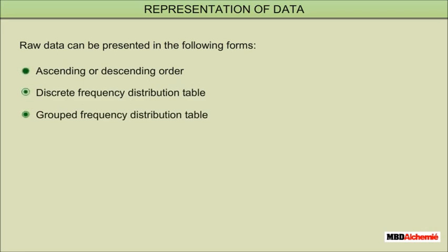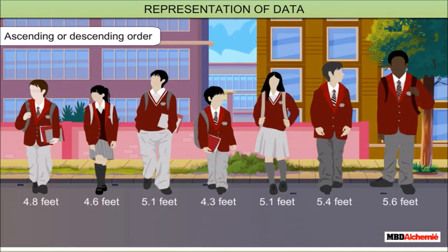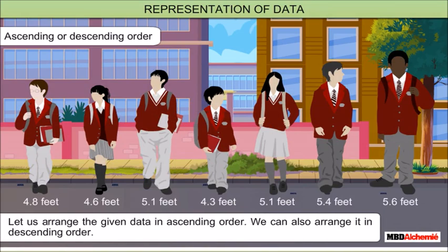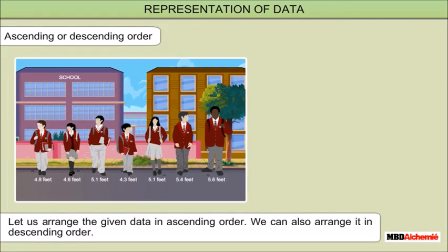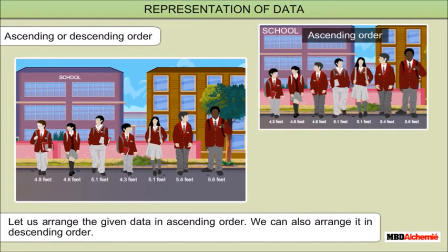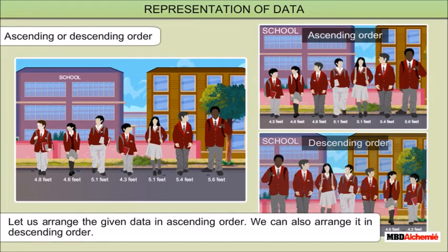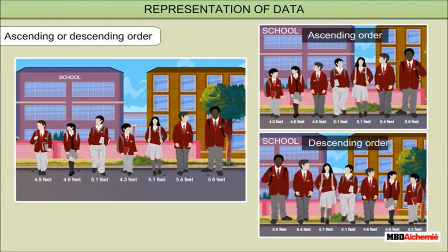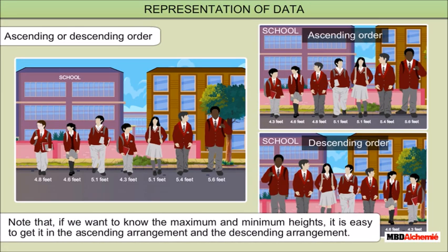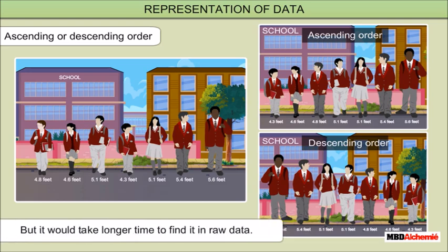Ascending or descending order: let us arrange the given data in ascending order. We can also arrange it in descending order. Note that if we want to know the maximum and minimum heights, it is easy to find them in the ascending or descending arrangement, but it would take longer time to find them in raw data.